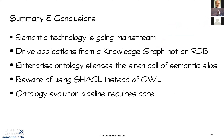So, we're nearing the end. We've got 20 minutes for questions. Semantic technology is going mainstream — it's probably 1 to 5% of all applications, but 1% of a vast industry is still significant. What you do is drive applications from a knowledge graph, which is always backed by an ontology, instead of a relational database. The enterprise ontology is extremely important — it silences the siren call to make more silos even when using semantic technology. We warn against using SHACL instead of OWL — you'll just build point solutions and undermine the whole point of having ontology. And the ontology evolution pipeline requires a lot of work.